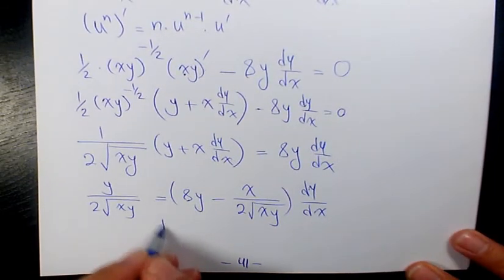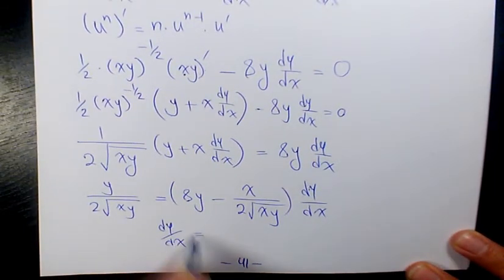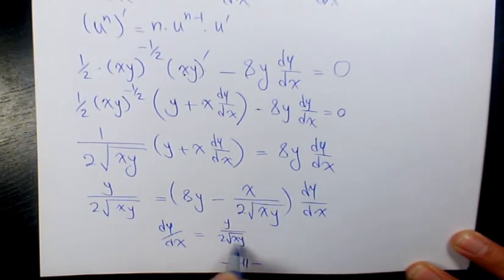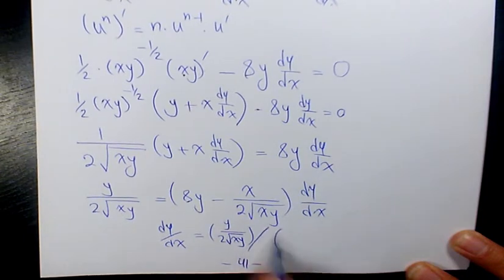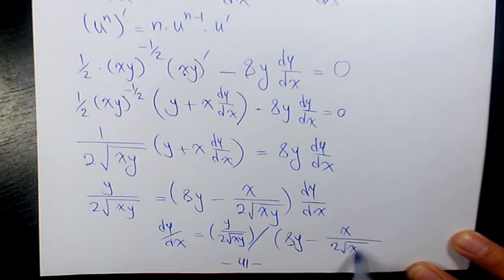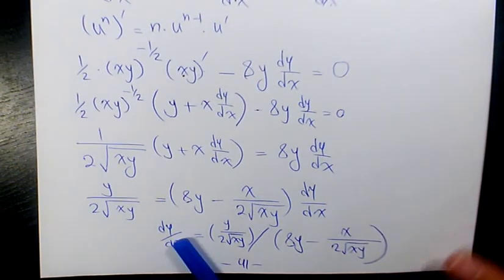dy over dx will be y over 2 root xy divided by 8y minus x over 2 root xy. This is going to be the final answer.